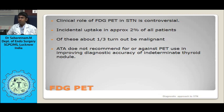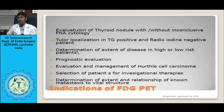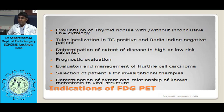Some nodules will show discrepant imaging — appearing hyperfunctional on pertechnetate but hypofunctional on I-123. This does not mean the nodule is malignant unless there is extranodular suppression; it is not a feature of malignancy.